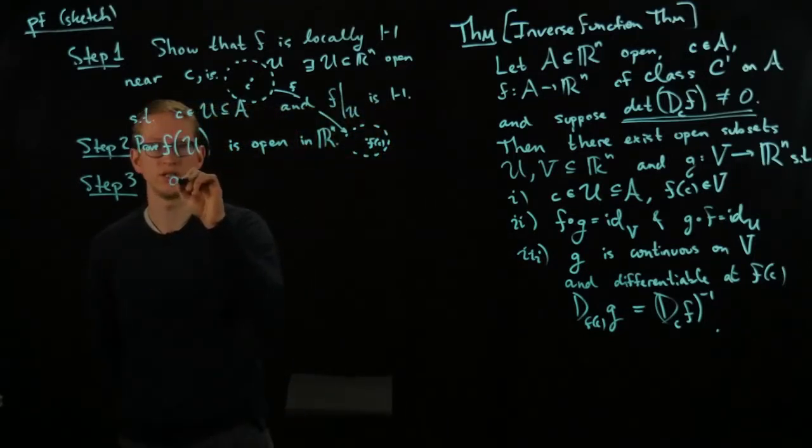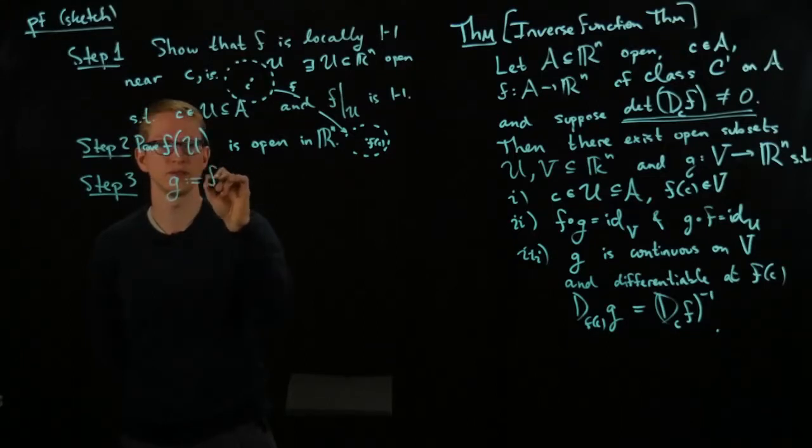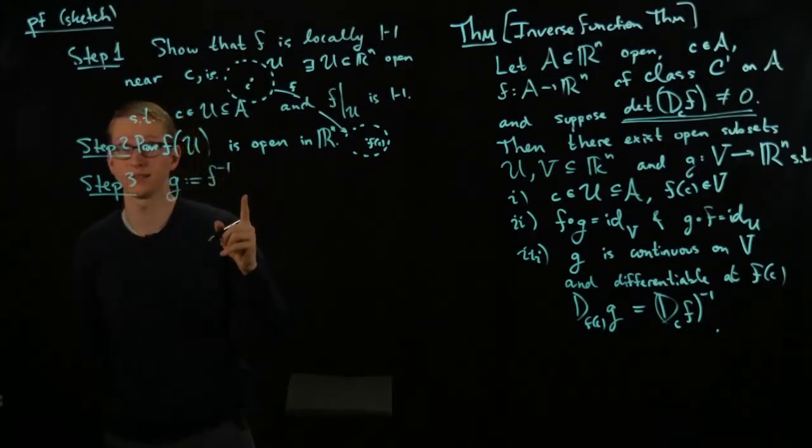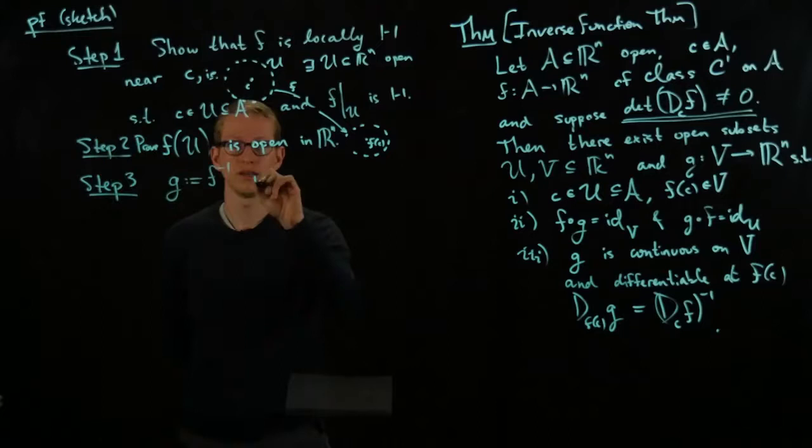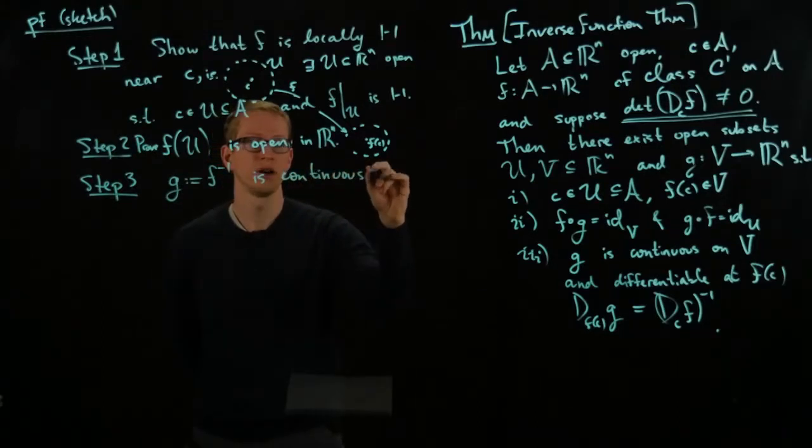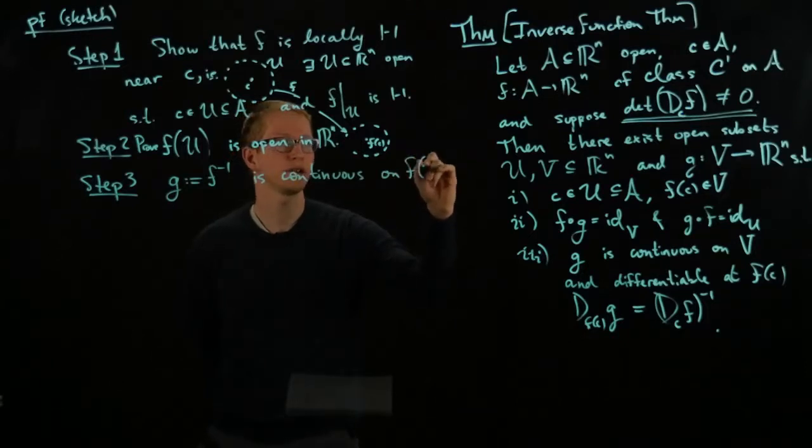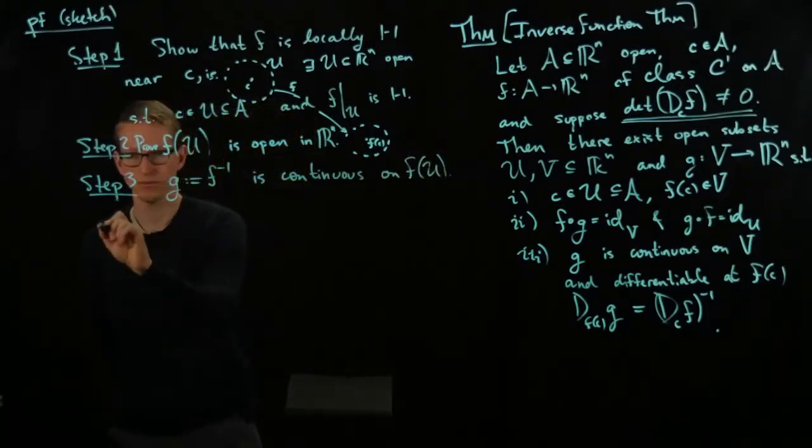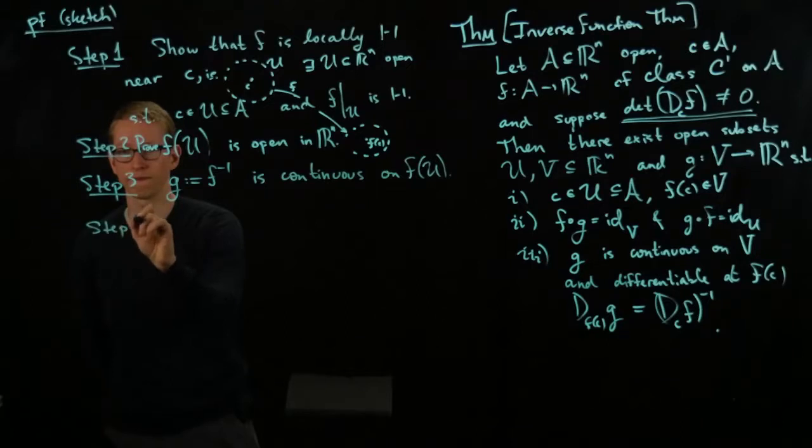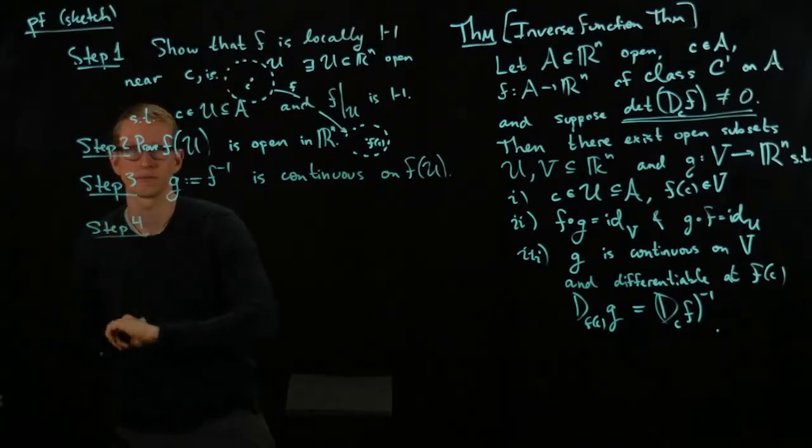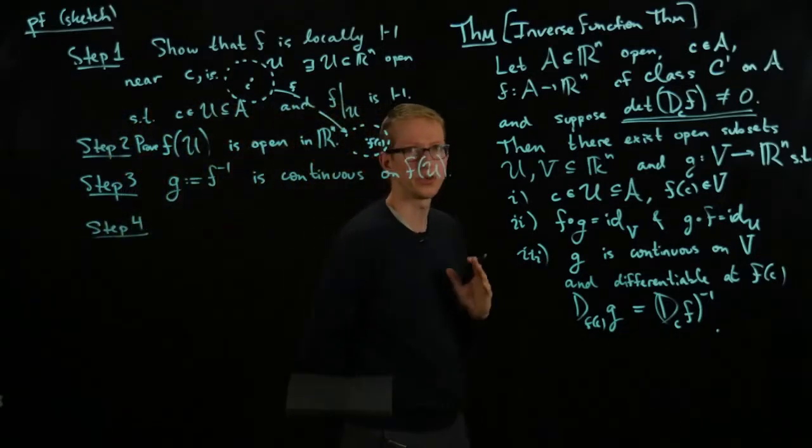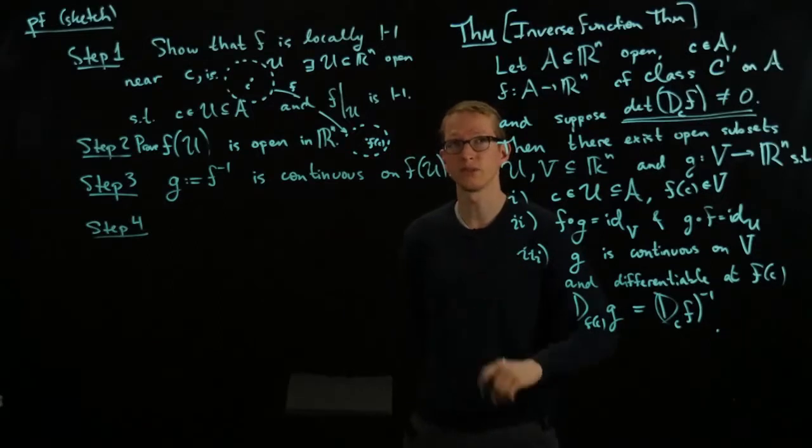So, that's the next part of the claim. So, the next part is G, which is defined to be the inverse of F, which exists by step 1, is continuous on the entire domain, F(U). So, the third step is prove that the inverse is continuous.